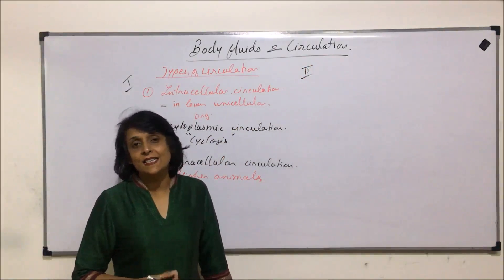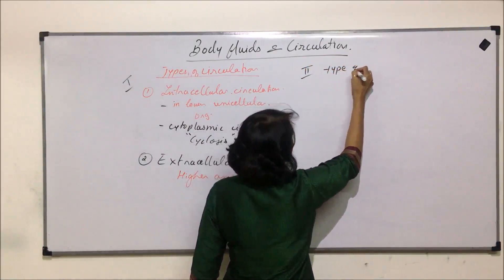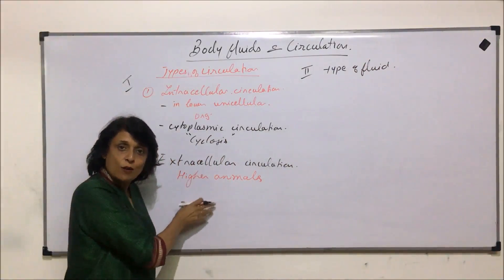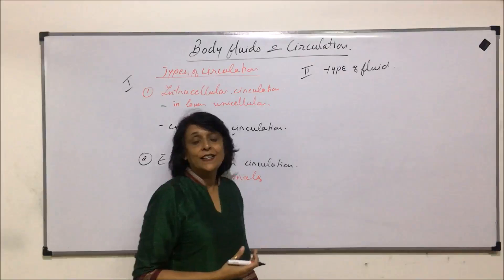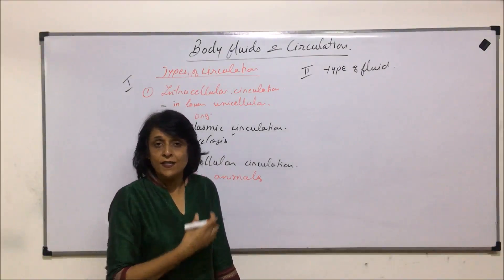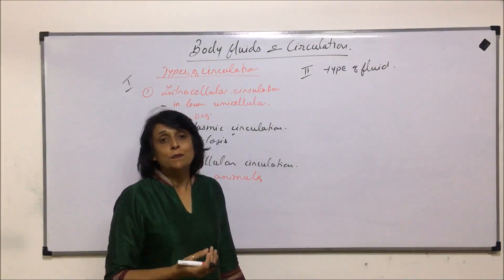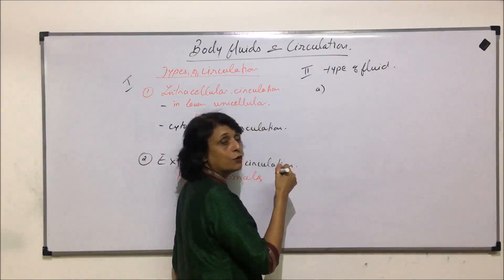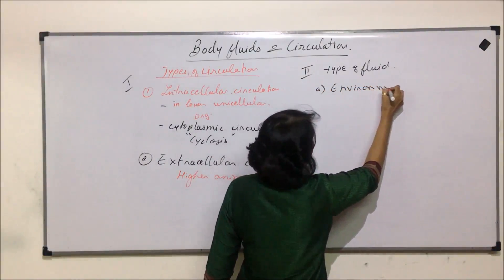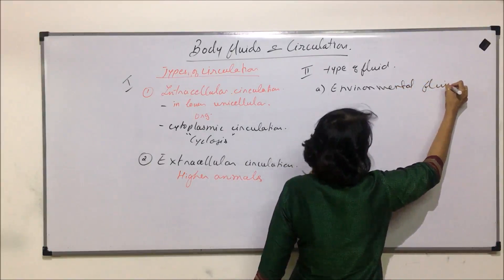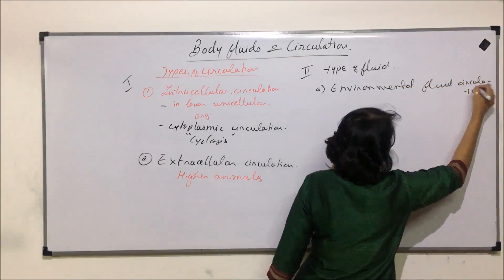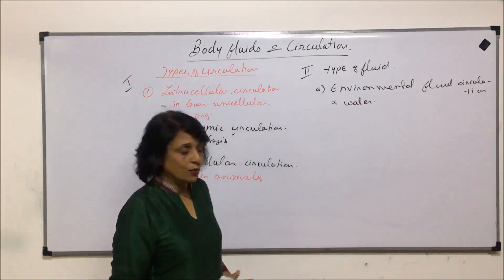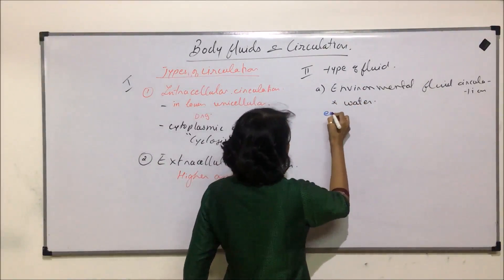The second classification is based on what is getting circulated — the type of fluid. Here we are asking: is it some outside fluid which is helping in exchange of gases and supplying nutrients, or is it a fluid which is inside? For the first type — environmental fluid circulation — this environmental fluid is normally water, so it is water which is getting circulated.